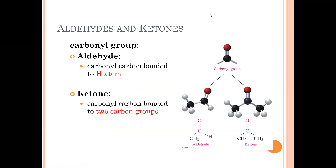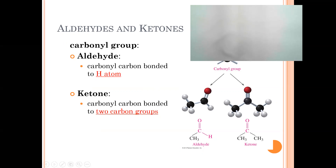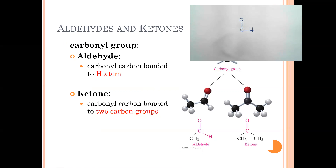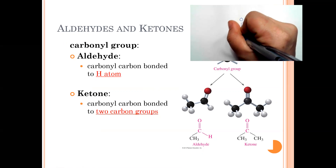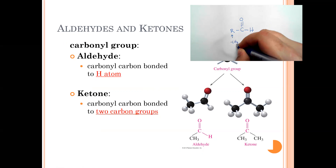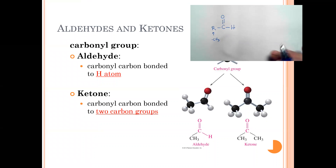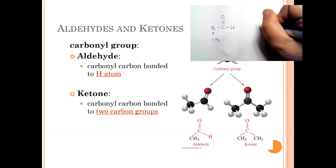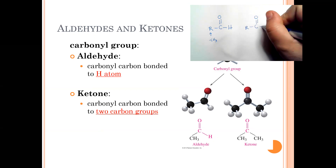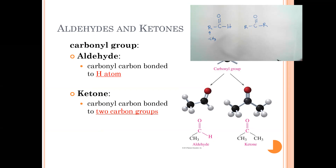Looking at an aldehyde, we have the carbonyl carbon attached to a hydrogen — that's our aldehyde — and also another carbon-based group, referred to as R (such as a methyl or ethyl group). In a ketone, that carbonyl carbon is landlocked between two other carbon-based groups. So an aldehyde has a hydrogen; a ketone is between two carbons.